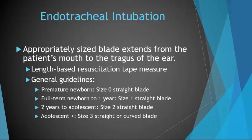You should use a length-based resuscitation tape as a guide to help decide what size tube to use. For premature newborns, use a size 0 straight blade. For full-term newborn to one year, a size 1 straight blade. For two years to adolescence, a size 2 straight blade. We use the straight blade because we want to displace the floppy epiglottis over the glottic opening.